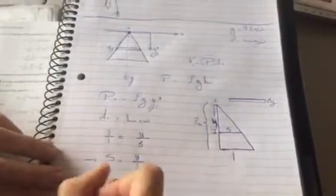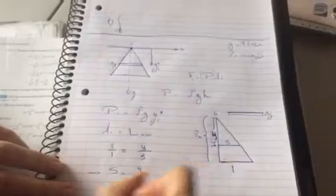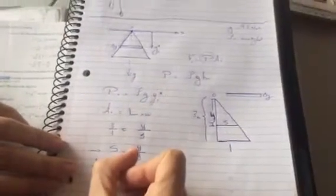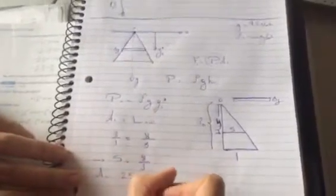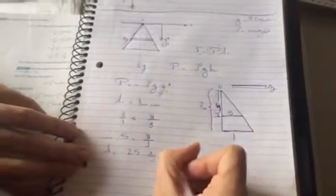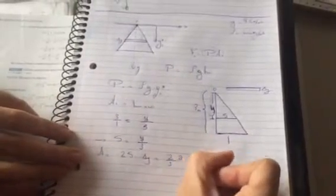And so, now we can take this, so that means the width of the strip, the area of the strip, is equal to the length, which is 2s times delta y, which is equal to 2 thirds y delta y.